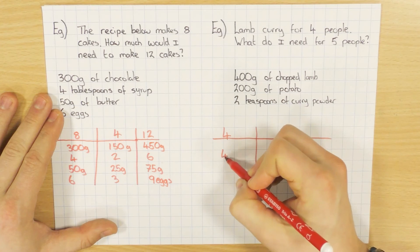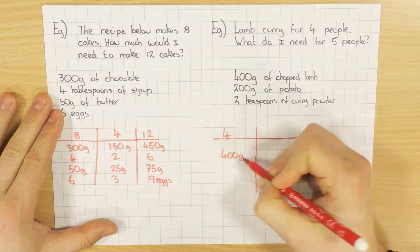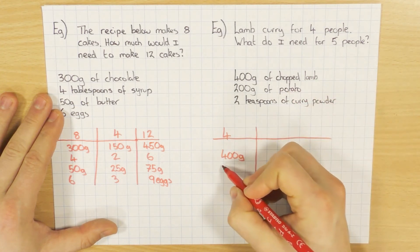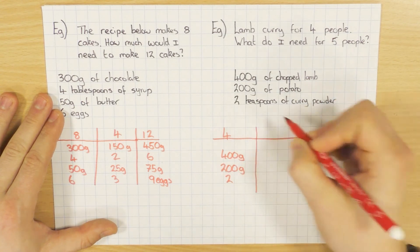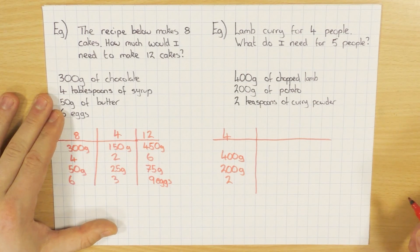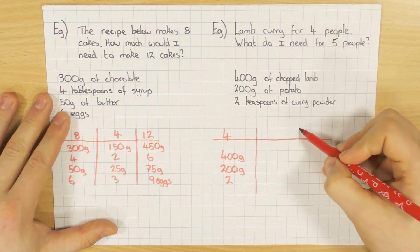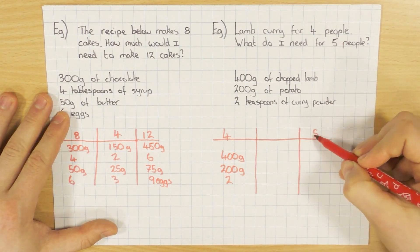So it's four people. And I have 400 grams of chopped lamb, just to make a curry this time. 200 grams of potato, and two teaspoons of curry powder. And I want to know what it is for five people.